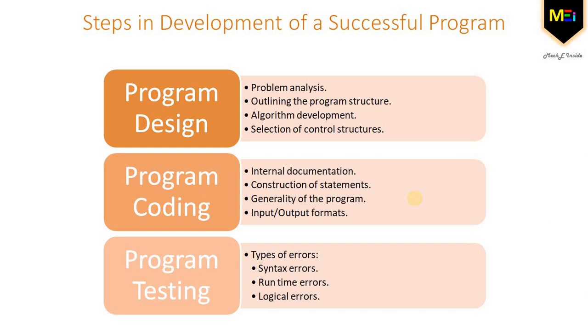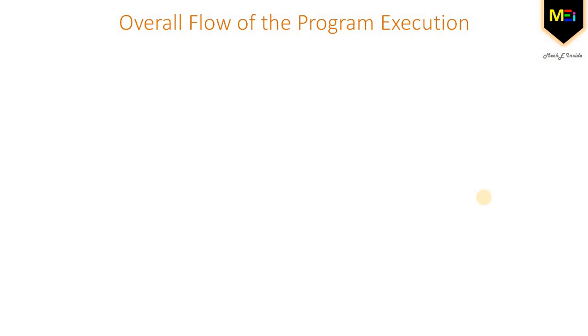Next is program coding. The algorithm developed in the previous step must be translated into a set of instructions that a computer can understand. The major emphasis in coding should be simplicity and clarity. The elements of coding style include internal documentation, construction of statements, generality of the program, and input or output formats. Next is program testing. Testing and debugging refers to the task of detecting and removing errors in a program so that the program produces the desired results. The various types of errors are syntax error, runtime errors, logical errors, and many more.